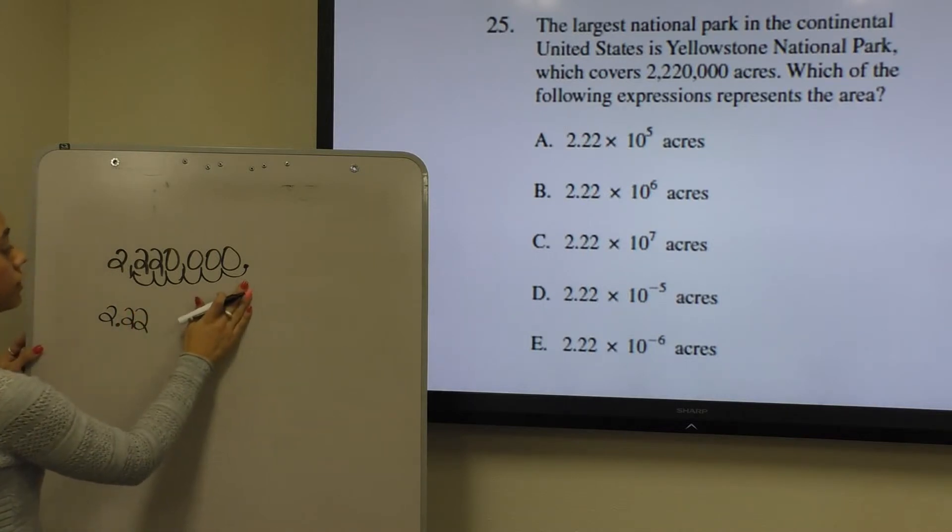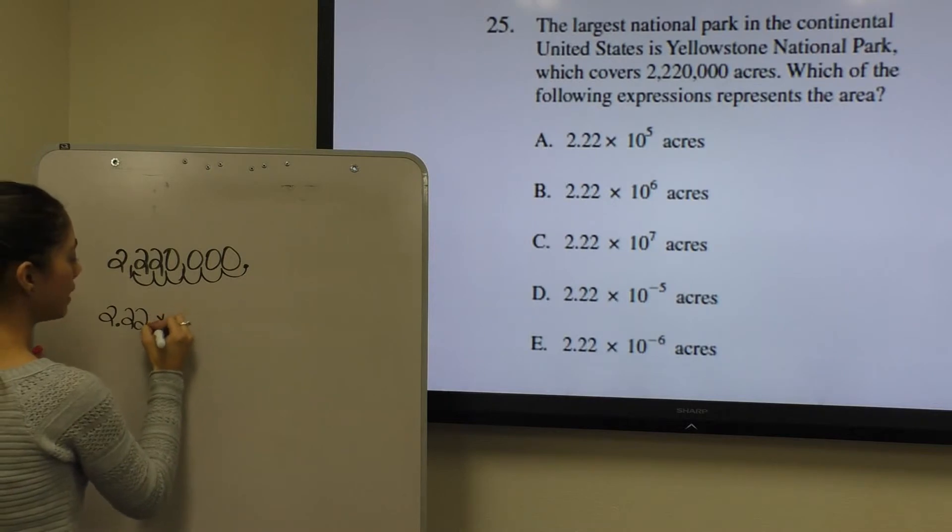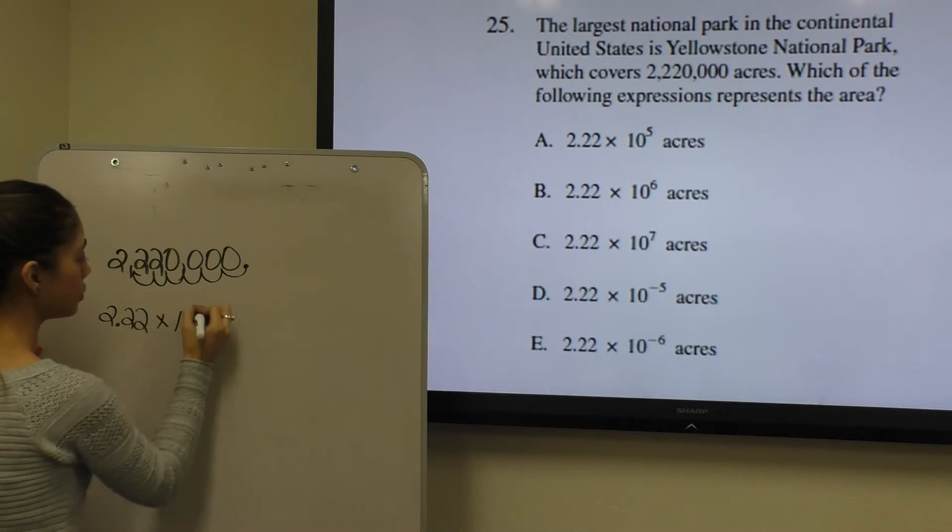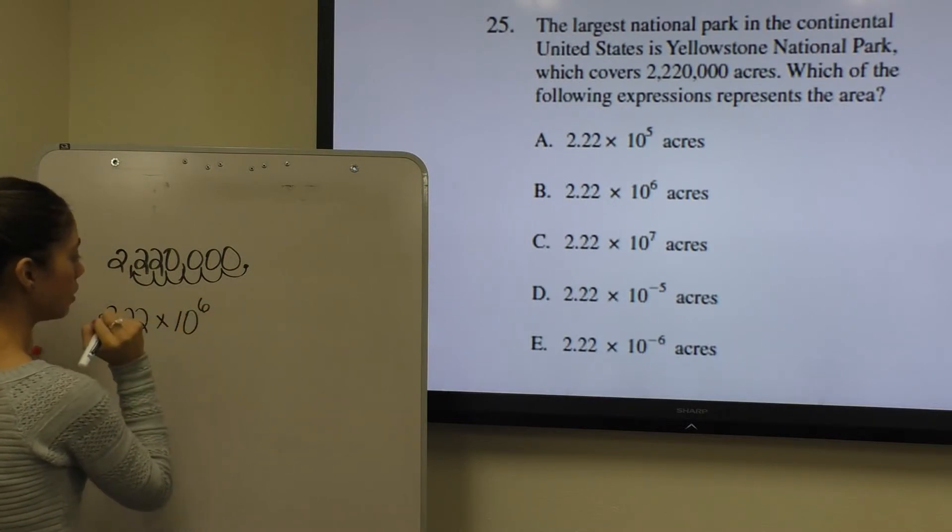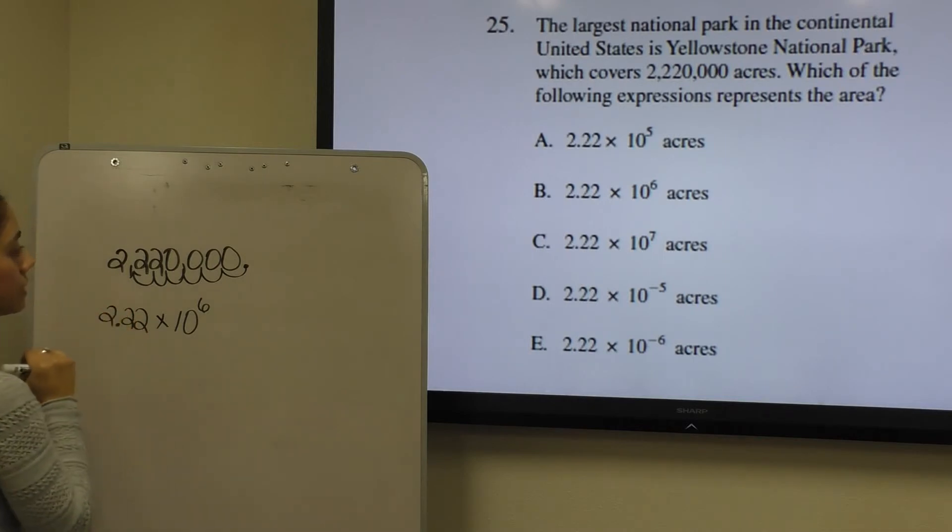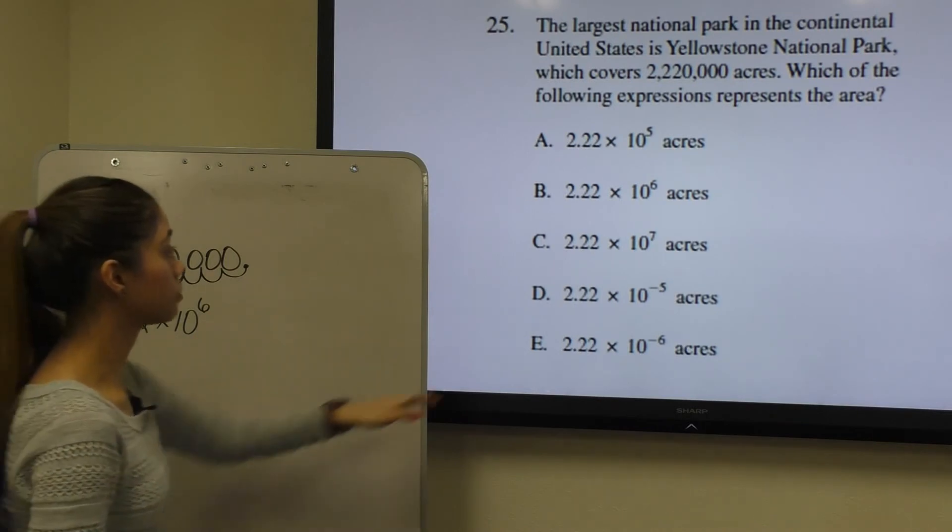Now since I moved it 6 places to the left, I would raise my 10 to the 6th power. If I had moved my decimal to the right, I would have raised it to the negative power. But since I moved it to the left, we raise it to the positive power. Which is why our answer is B.